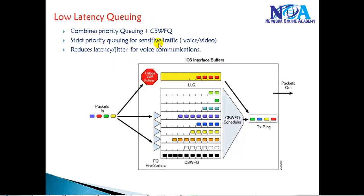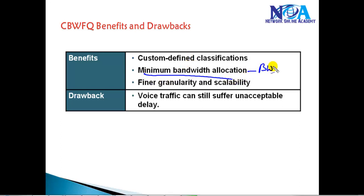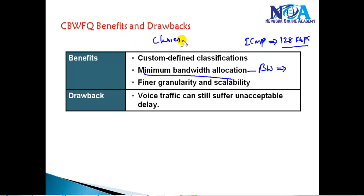In the previous section we discussed class-based weighted fair queuing. In that case, it provides a minimum bandwidth guarantee at the time of congestion. We define this with a bandwidth command — for example, ICMP traffic should be guaranteed 128 kbps. In case of no congestion, they can use excess bandwidth, but that is the minimum guaranteed. Each class can define a specific guaranteed bandwidth, and all packets are sent based on the bandwidth defined with no packets given any priority.